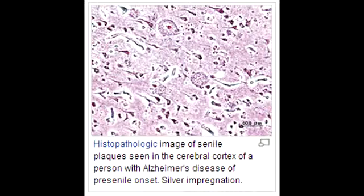What is the most common cause of dementia in the elderly? The most common cause of dementia in the elderly is Alzheimer's disease. Down syndrome patients have a high risk of developing Alzheimer's. The familial form accounts for 10% of all Alzheimer's disease.